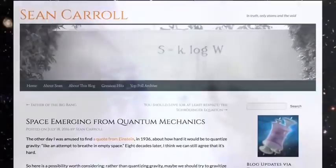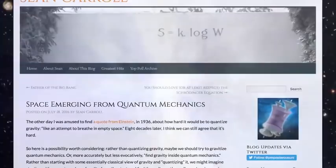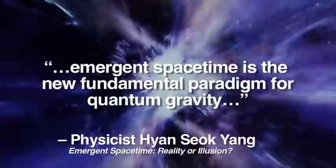Physicist Sean Carroll writes on his blog, Space Emerging from Quantum Mechanics, that the most likely way to explain the nature of gravity is to note space emerges from quantum mechanics, not that space is a fundamental property of the subatomic world. Physicist Haiyan Siok Yang says emergent spacetime is the new fundamental paradigm for quantum gravity. This new paradigm suggests space is not fundamentally real, but emergent from the underlying quantum realm.